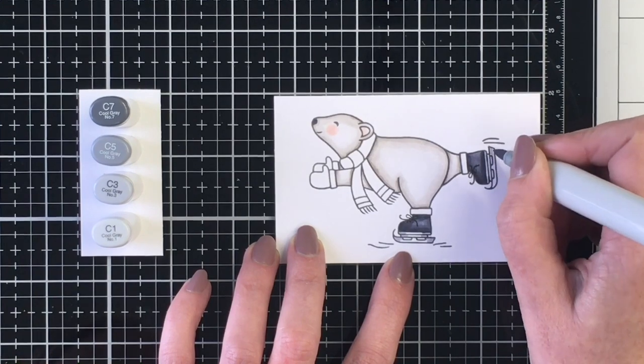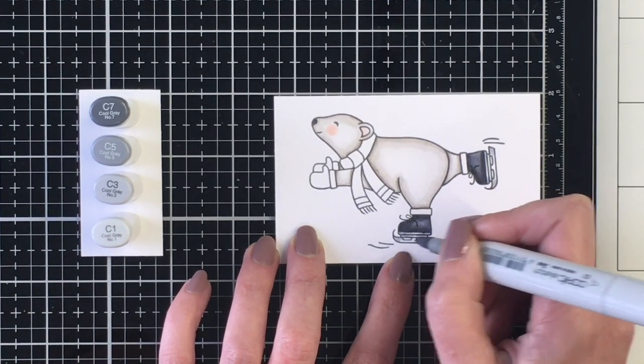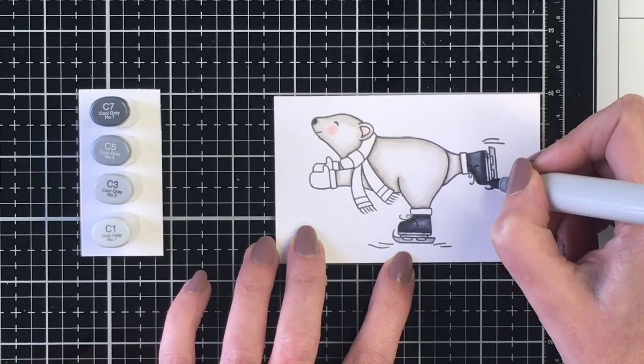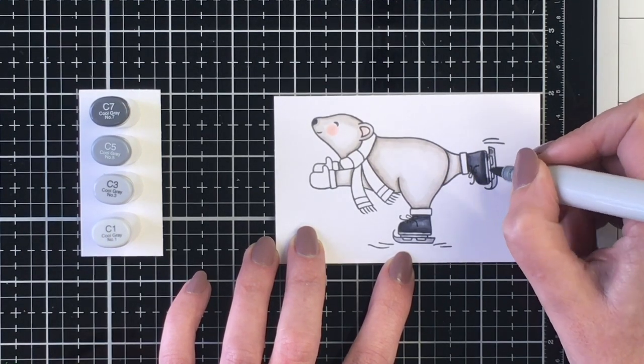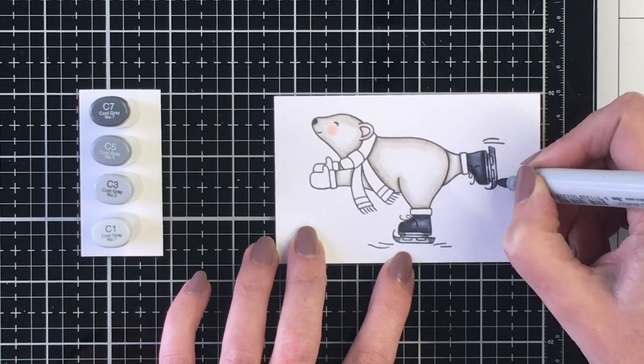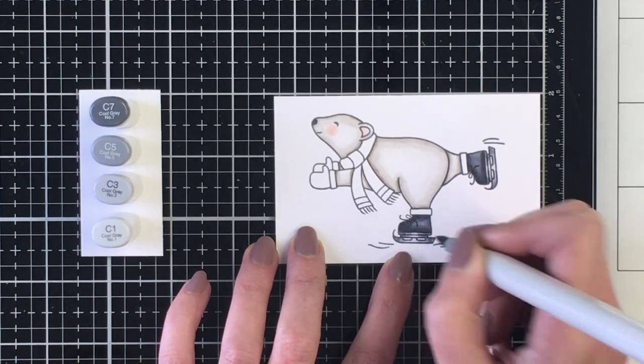For the blades of the skates, I wanted them to look silver. So I'm just going to use the C3 and the C1 marker for that. And that will differentiate between his black skate boots and the blades of the skates.